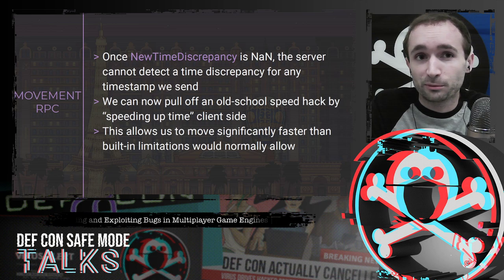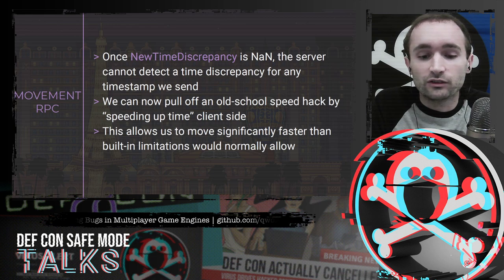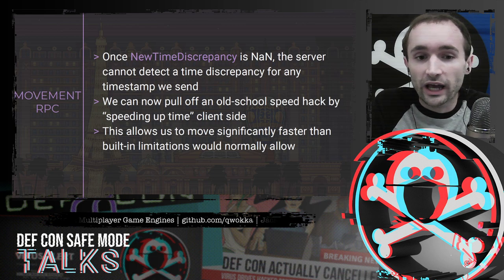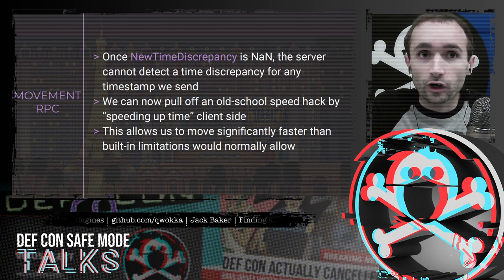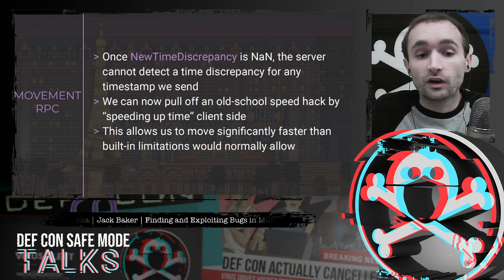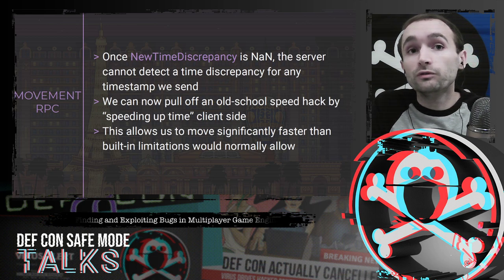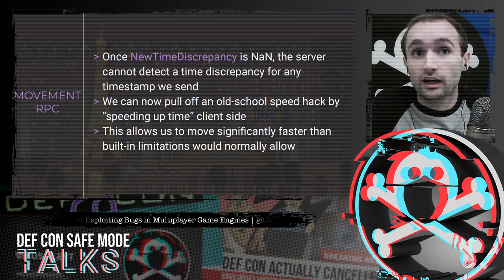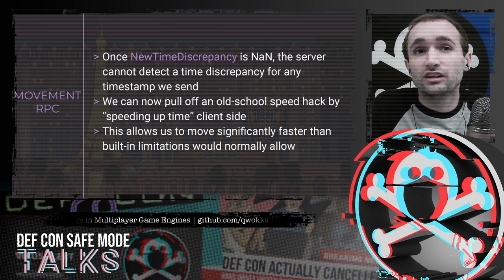I've oversimplified this a bit, but the most straightforward way of exploiting this is to send RPCs in groups of three: the first RPC has a NaN timestamp, the second has a timestamp just slightly greater than zero, and the third has a timestamp well in the future. Every time you send this grouping, it moves you forward some amount. Because the server can no longer detect the discrepancy, you can do this as often as you want — the only real limitation is how quickly you can send those RPCs and have them processed.